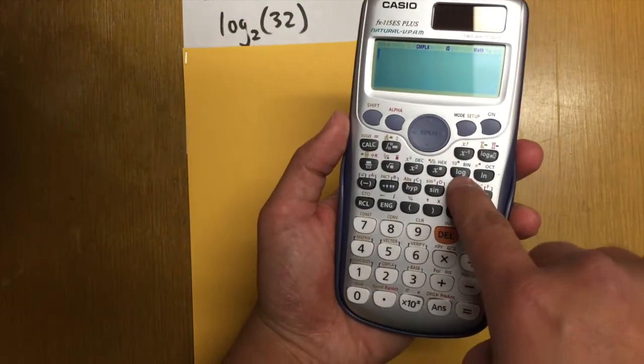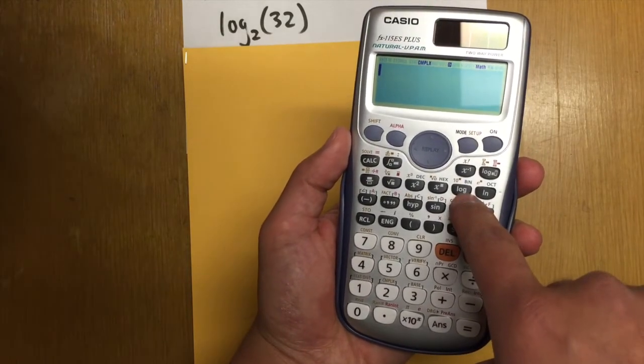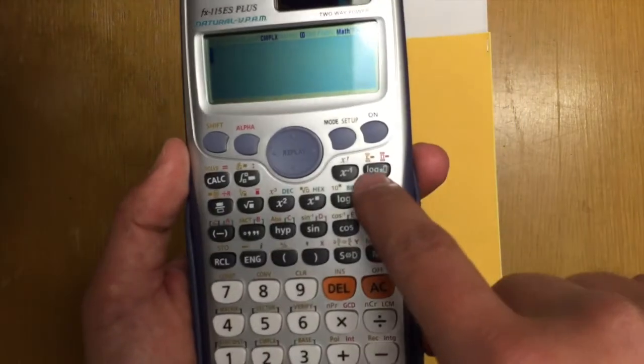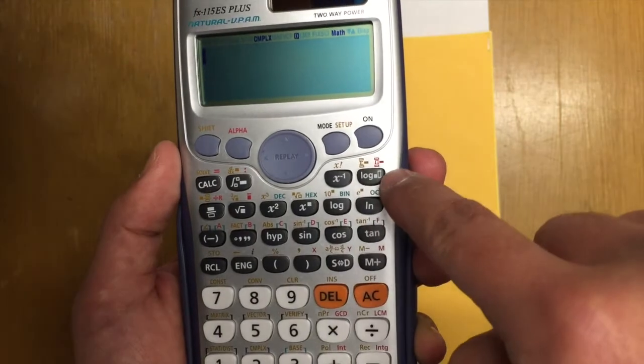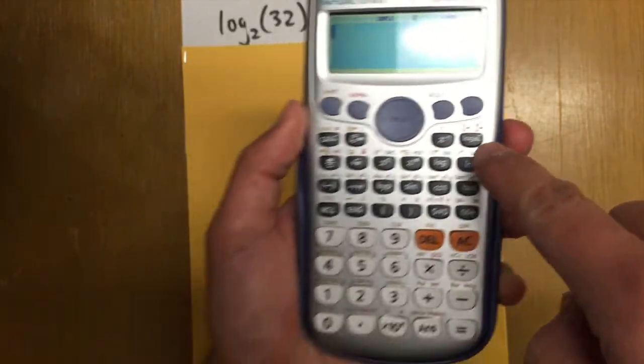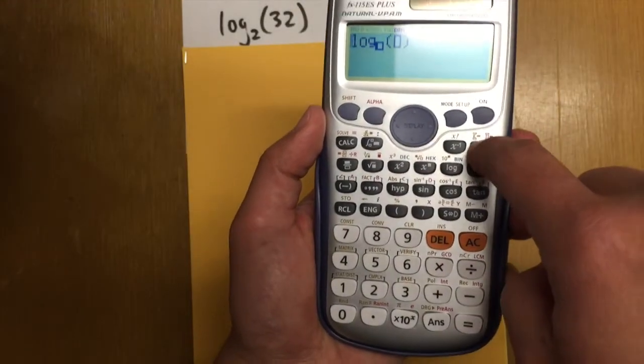This is the usual log key. And that's the key that many of the calculators have. But then you see this right here. We have the log with a small square and then a rectangle right here, right? This is the key that we are going to use. Press that.